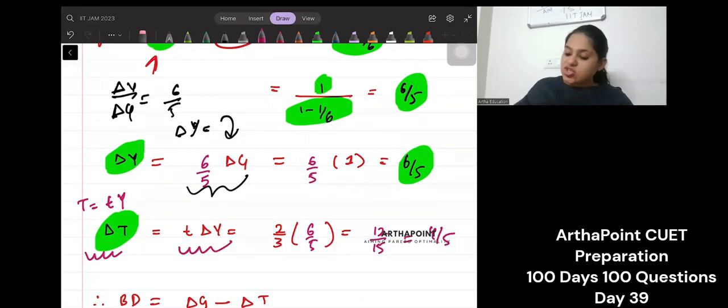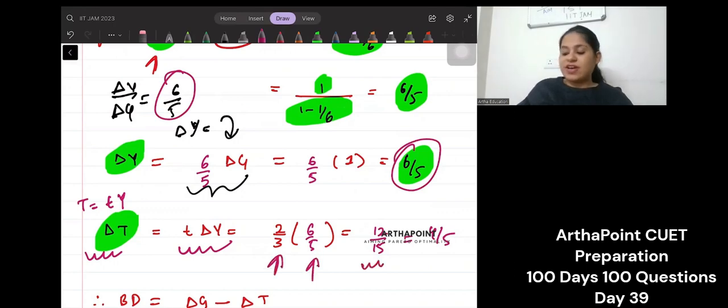So change in Y is coming by 6 by 5 amount and T is 2 by 3. So this comes down to 12 by 15, which is nothing but 4 by 5.